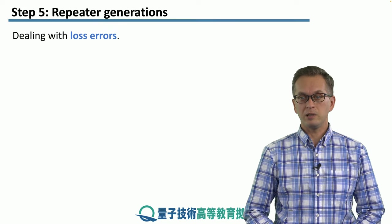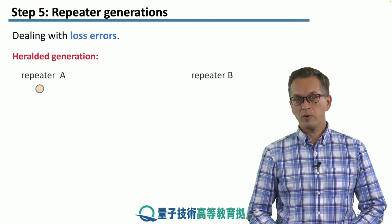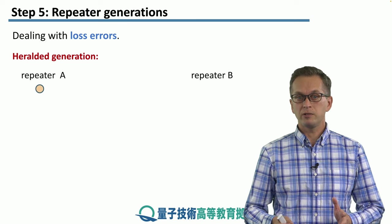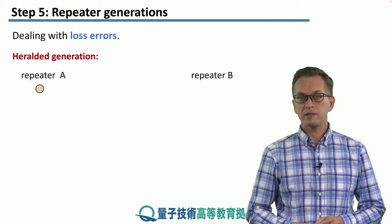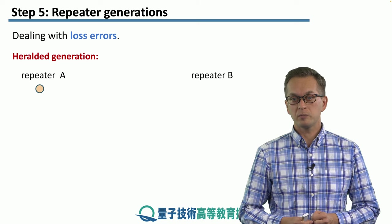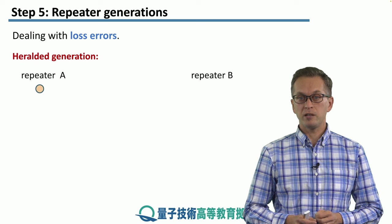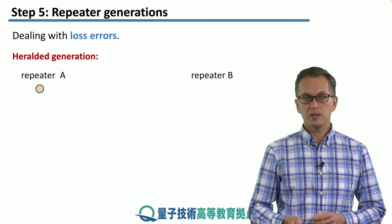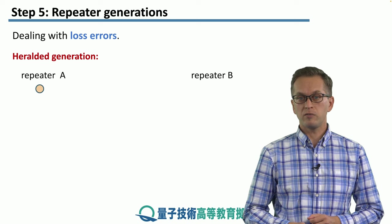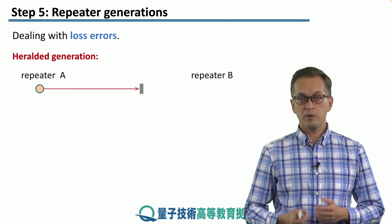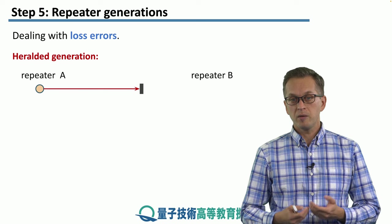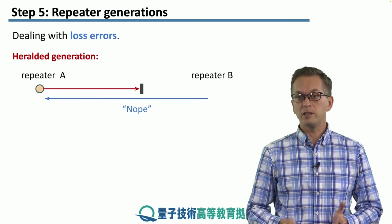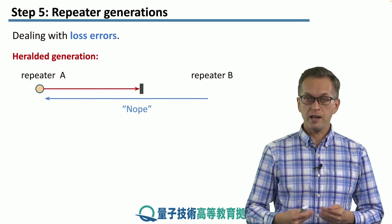So how do we deal with loss errors? One way of dealing with loss errors is via heralding — we call this heralded generation. How it works is basically you have to send an acknowledgment, a message back to the sender that you have received the photon or received the package. So let's say repeater A is trying to send the photon to repeater B. Repeater A tries the first time, but the photon does not arrive. So repeater B says: no, I did not get anything.